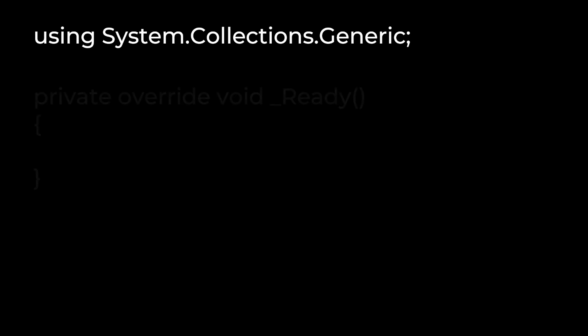Down below where we want our list, we start with the data type: List. If this is a member field — a class-level variable — be sure to include the access modifier before the List keyword. In our array declarations, we started with the data type we wanted to store, not the word array. It should be noted that the way List does it is standard, and array is the weird one.